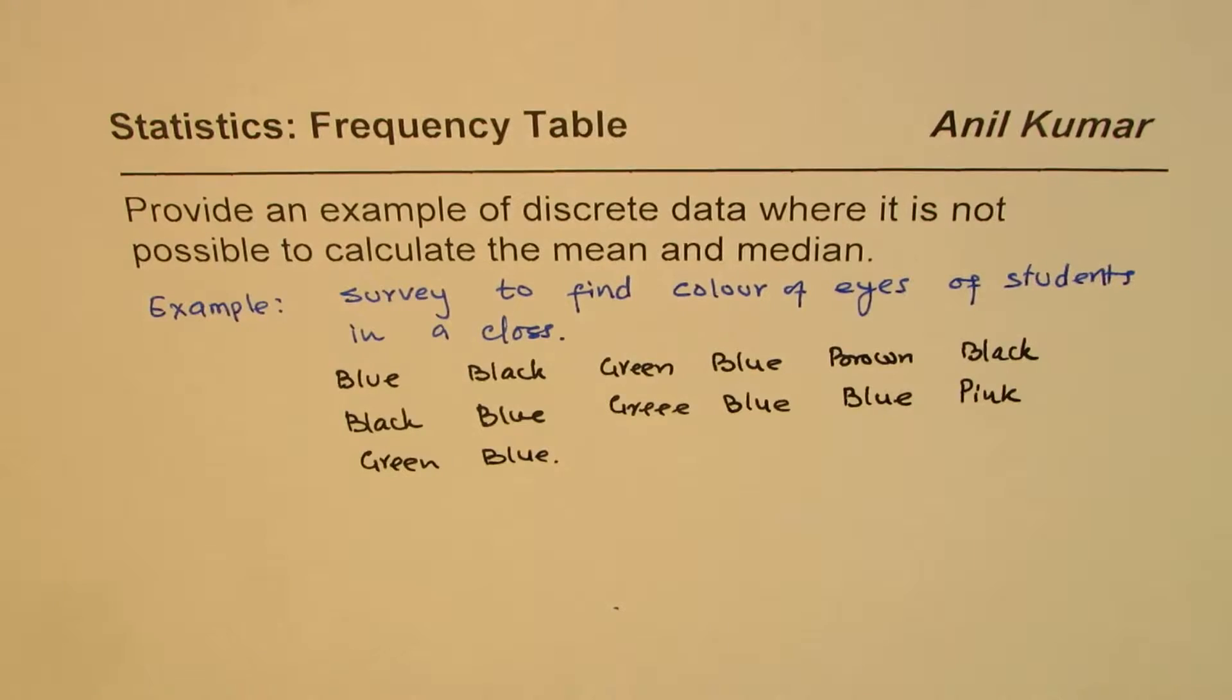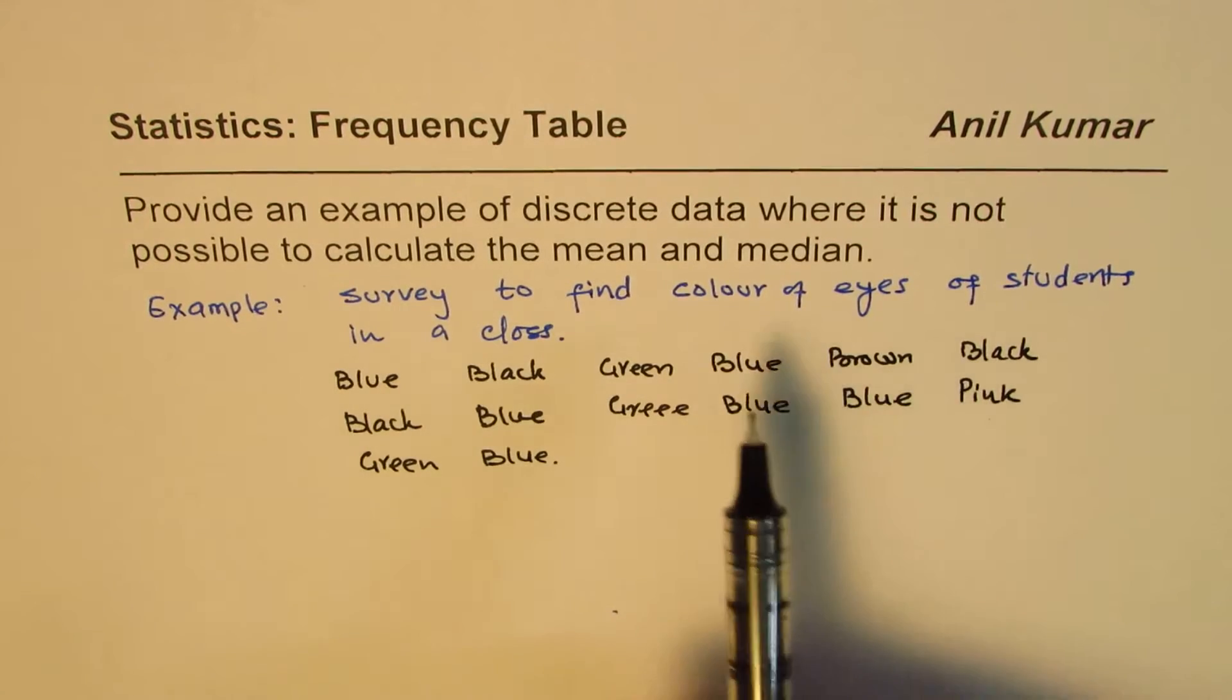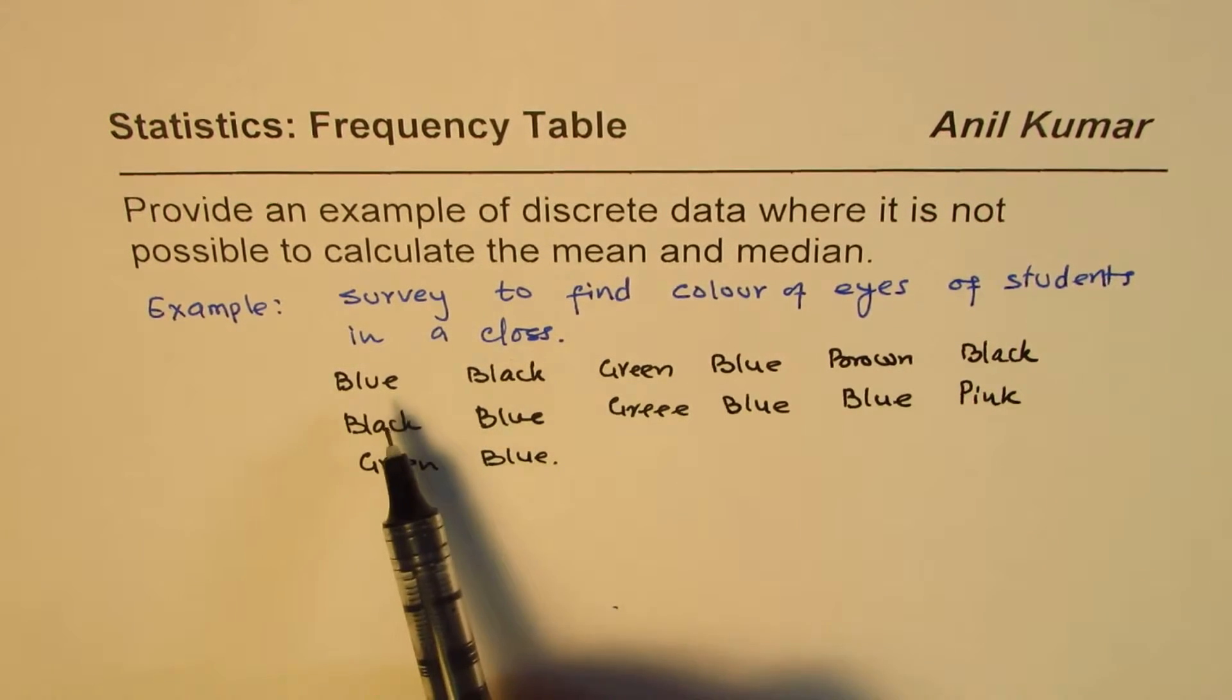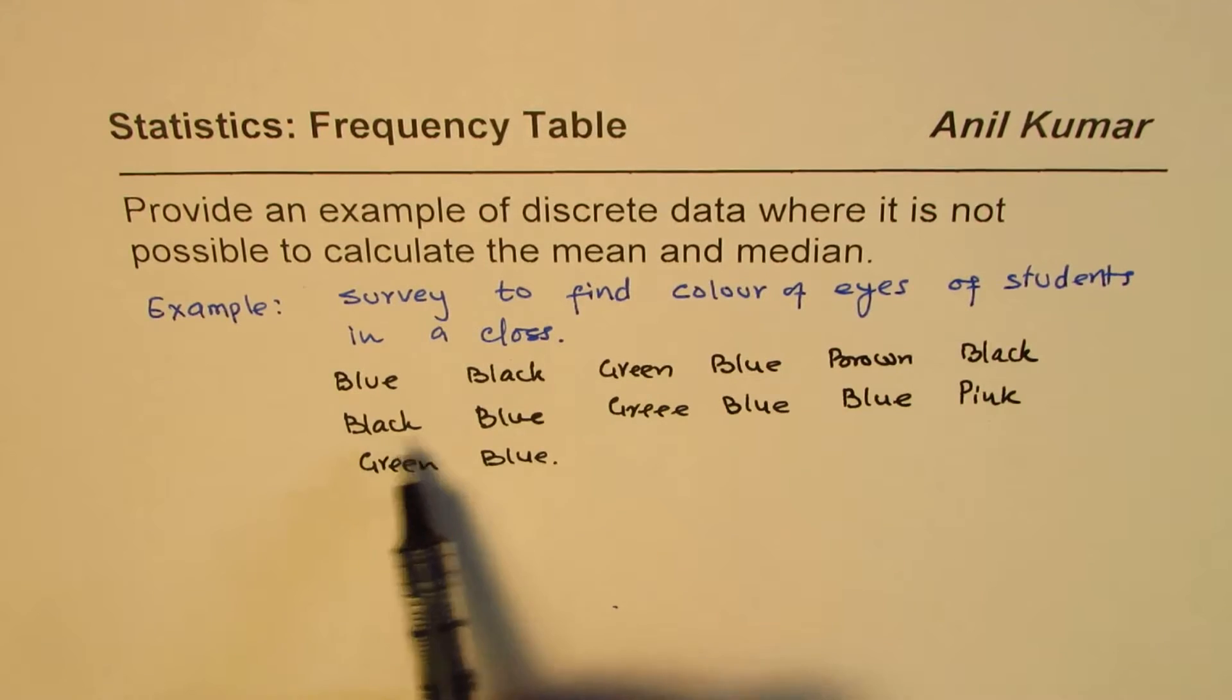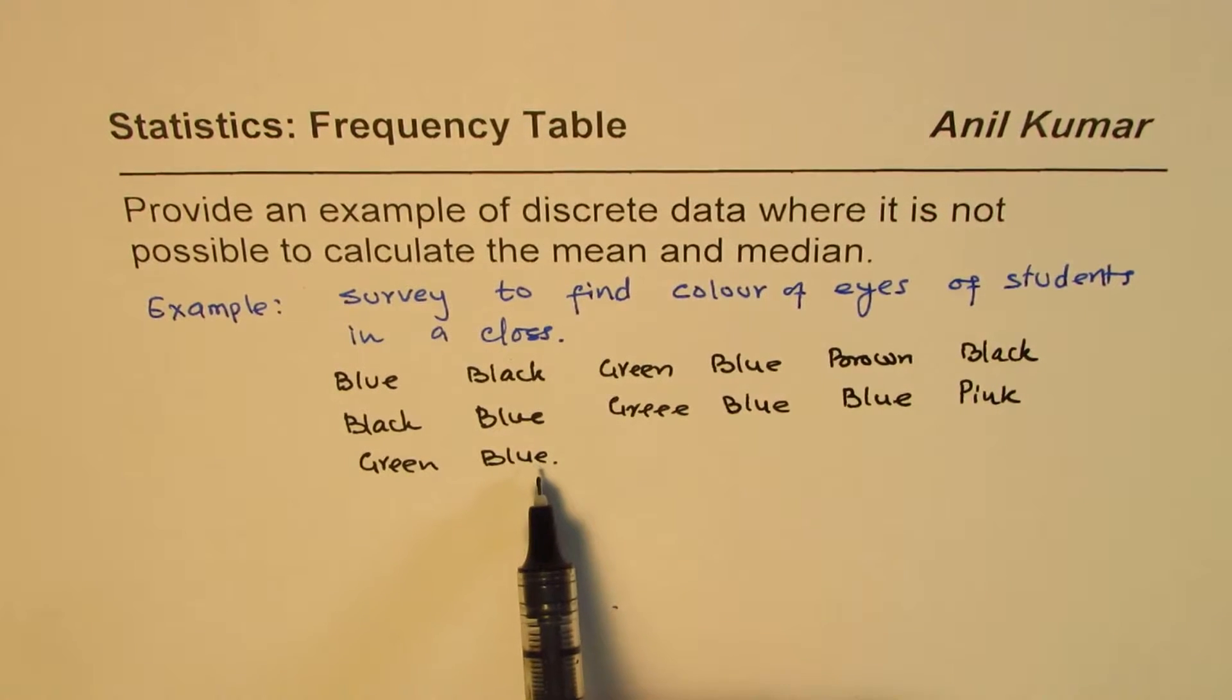Let us say we conduct a survey and this is what we find and then we tabulate the data. And we have this data that the colour of the eye of few students was blue, black, green, blue, brown, black, black, blue, green, blue, blue, pink, green and blue.